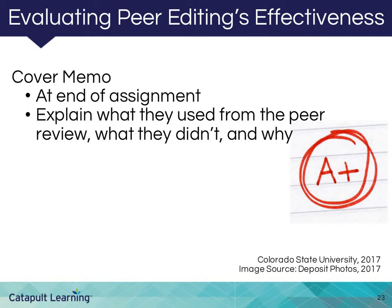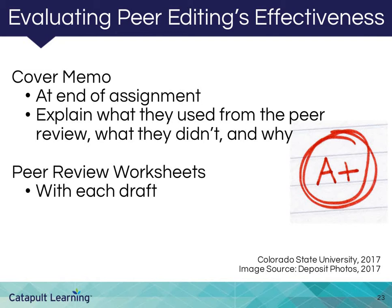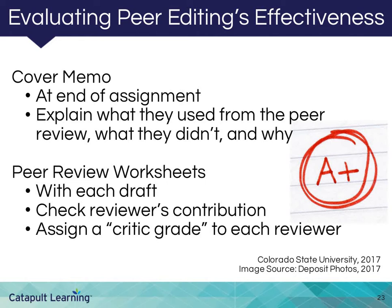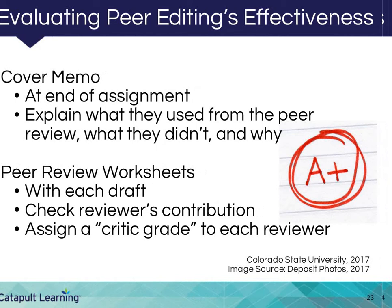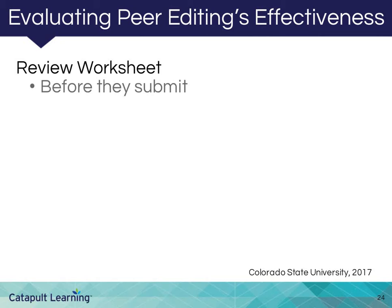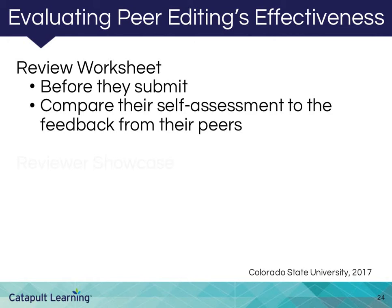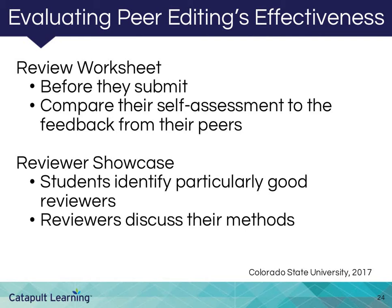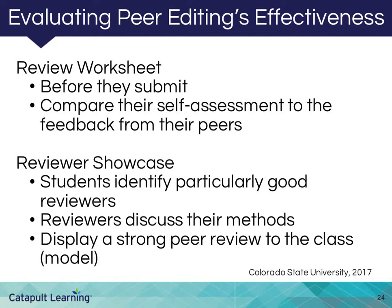If reviewers have written their comments for the writer, have students hand in peer review worksheets with their drafts. You can do a quick check of the contribution of each reviewer and see how much attention the writer has paid to the reviews. Give each reviewer a critic grade worth a few points. Another option is to have students fill out a review worksheet on their own papers before they submit them — they can compare their self-assessment to the feedback from their peers. You could also ask students to identify particularly good reviewers and then have those excellent reviewers discuss their methods in class. If the work is done electronically, you might display a strong peer review to the class as a model, with permission of the author and reviewer.